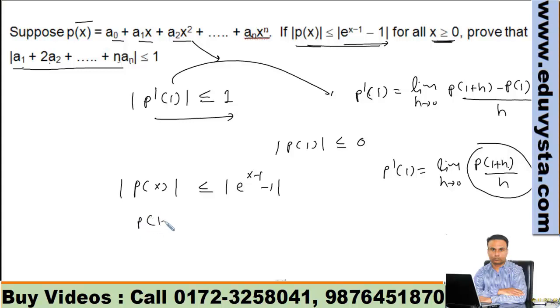We have |p(1+h)| is less than or equal to e^h - 1. Kya proof ye? Kya rakhein? Both sides, mod h se divide karenge. p(1+h)...